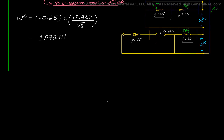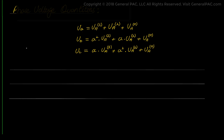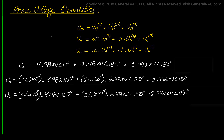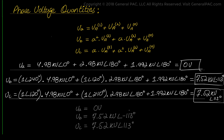Now that we've calculated all three sequence voltage quantities — positive, negative, and zero — we use the familiar transformation equations to get the phase voltage quantities at the point of the fault on the 13.8 kV bus. Plugging in the three sequence components and the A operator and solving with a scientific calculator: the voltage at phase A equals 0 kV, the voltage at phase B equals 7.52 kV at negative 113 degrees, and the voltage at phase C equals 7.52 kV at positive 113 degrees.